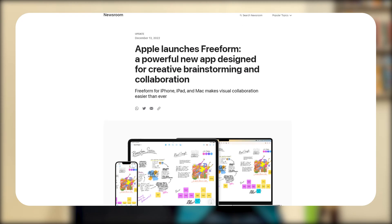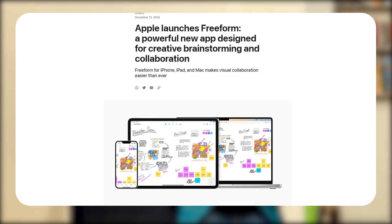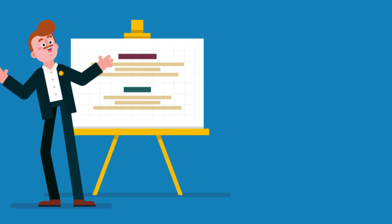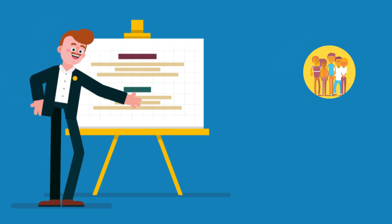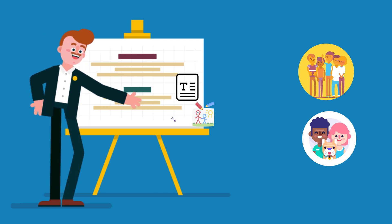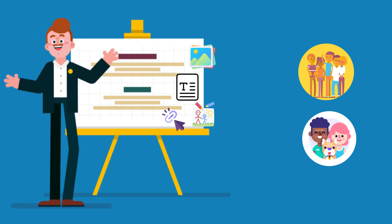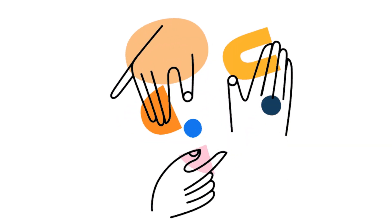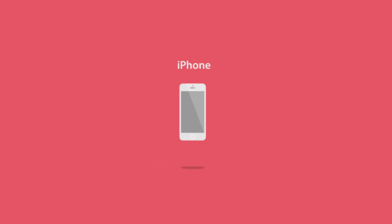Apple just launched a Freeform app for all of its devices. With Freeform you can create shareable whiteboards with your friends and family using drawings, text, links, photos and more. You can use it to sketch out a school project, design a mood board, or brainstorm ideas and so much more. Freeform is available on iPhone, iPad and Mac.